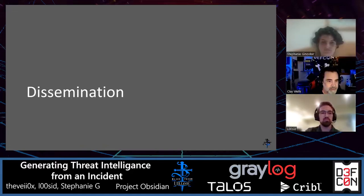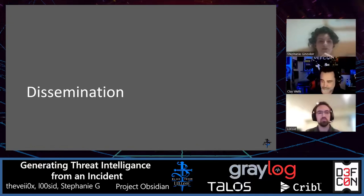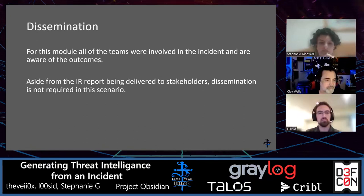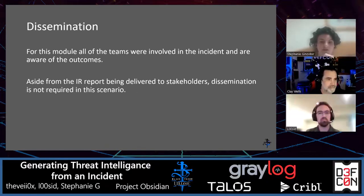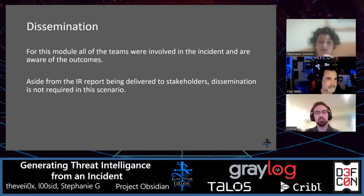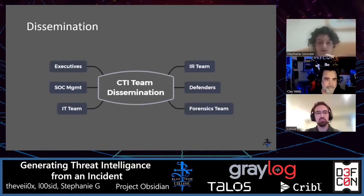These last two sections will cover dissemination and feedback and evaluation. In this kill chain specifically, since all of our teams were involved in the incident, they're already aware of the outcomes. Aside from the report being delivered to our stakeholders, we don't have anyone else that we have to update. In another scenario, if there was a team that wasn't involved and was not a stakeholder, you'd want to think about how to distribute the information to them and what they need to know about the incident. The stakeholders in this specific kill chain were the executives, management, IT team, and members of our SOC.